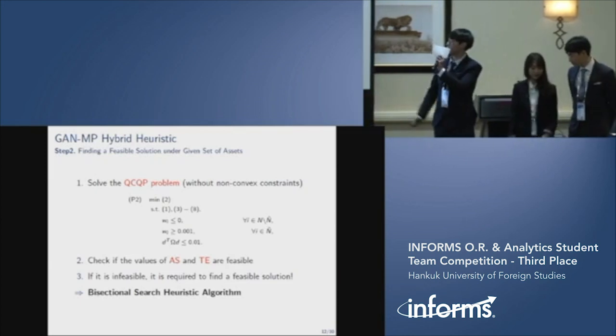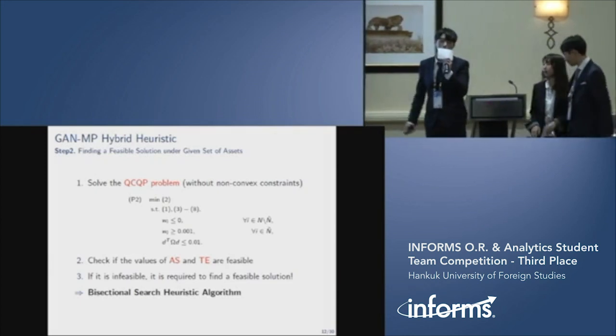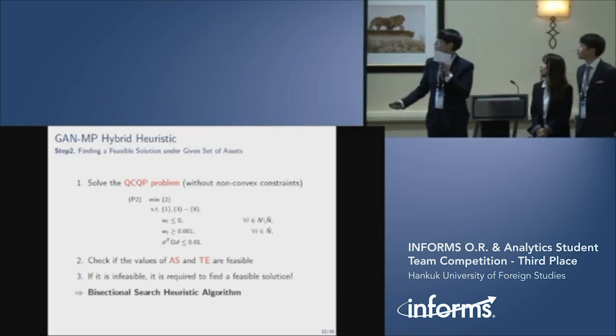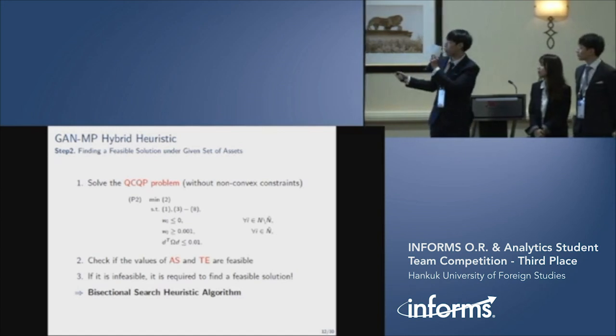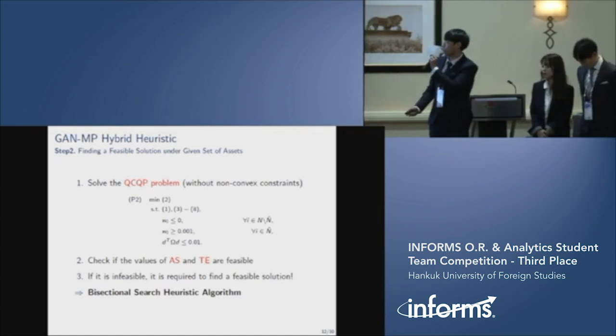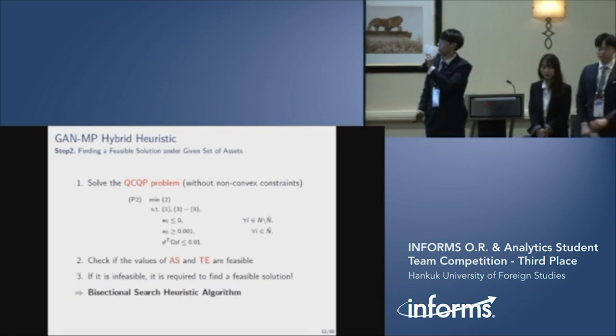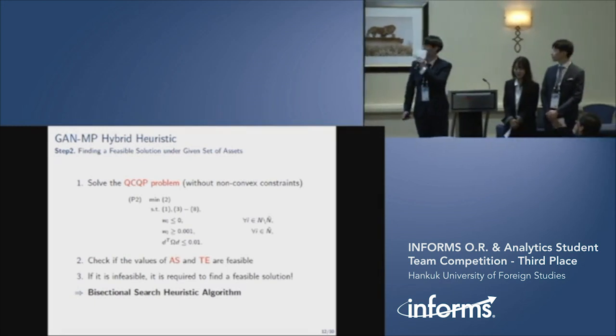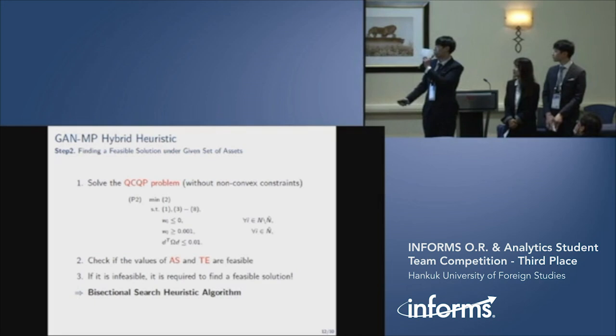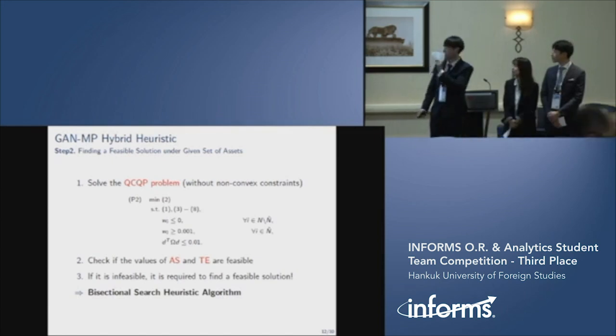Now we move on to step two. Under the given set of assets, we found a feasible solution. First, we solved the QCQP problem. Since P2 doesn't contain any non-convex constraints, it can be solved in a short time. After that, we check to see if the value of active share and tracking error are in the range. We know that it is not satisfied in many cases. So, we propose a bisectional search heuristic algorithm to find a feasible solution.